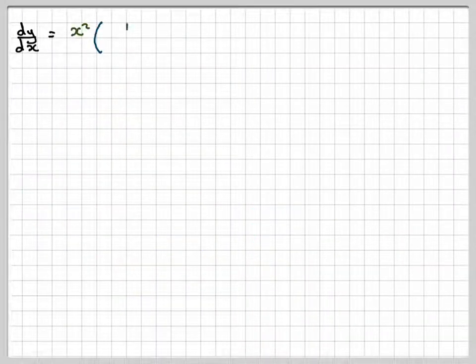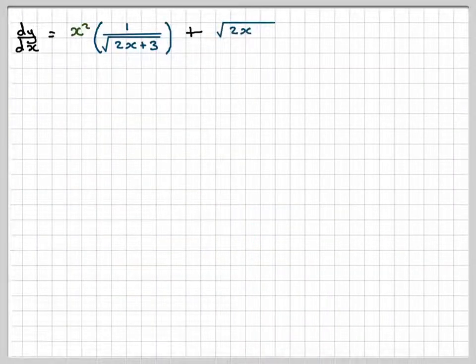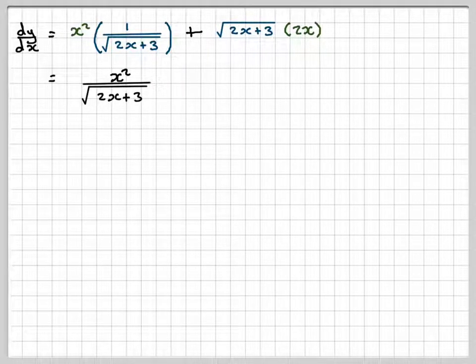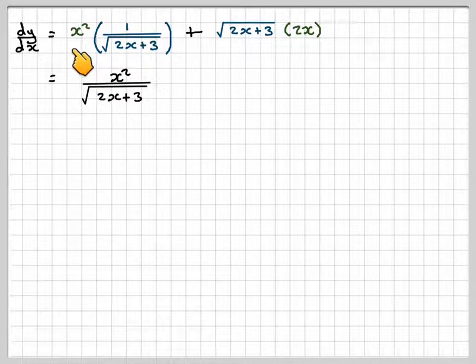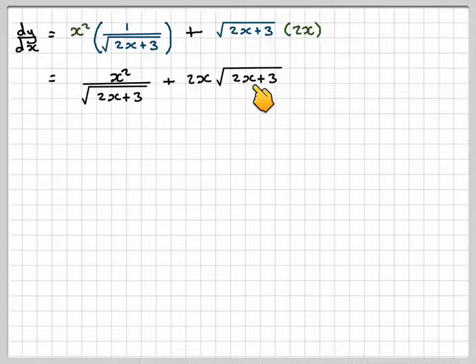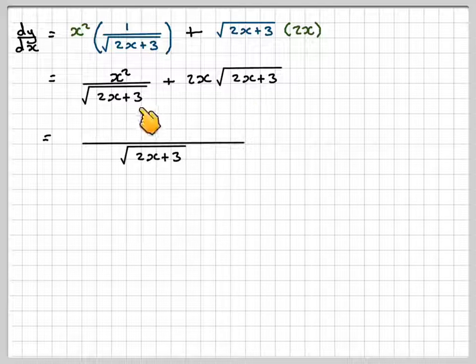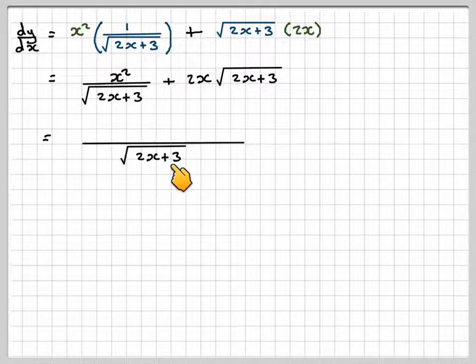Writing that out again, tidying up first of all. We've got x squared over the square root of 2x plus 3, plus 2x times the square root of 2x plus 3. Now writing this with a common denominator, the square root of 2x plus 3, this will just be x squared.